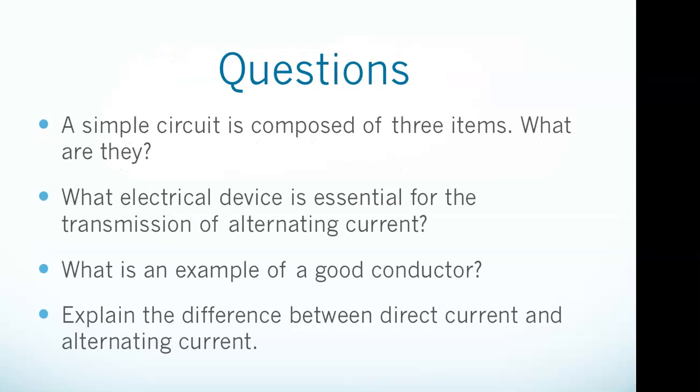Okay, then we jump back into our questions. Right, so we covered all of these. What are the three things necessary for a simple circuit? That was the very first thing we talked about. What electrical device is essential for the transmission of alternating current? Conductor example. Explain the difference between DC and AC.